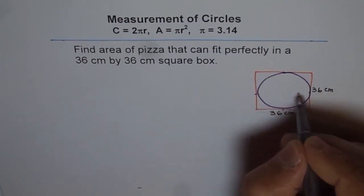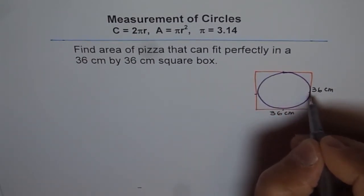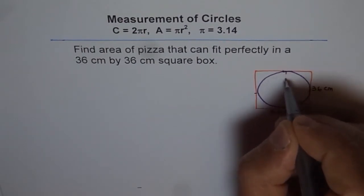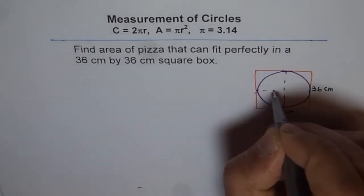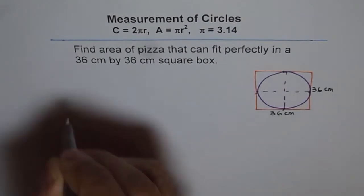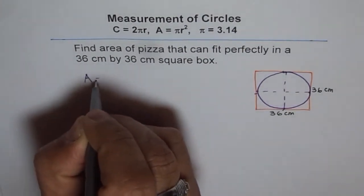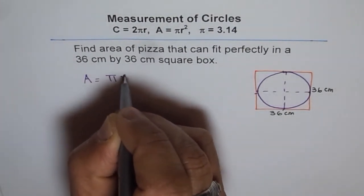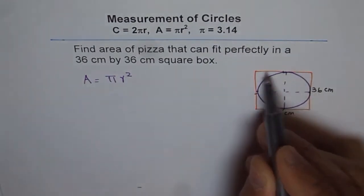Now, so what we need to find is the area of this. How can you find area? Area of a circular thing is pi r square. So we know area A equals to pi r square. Now, what is the radius?